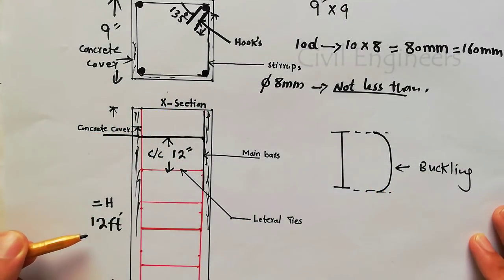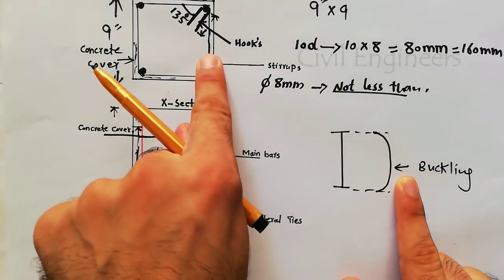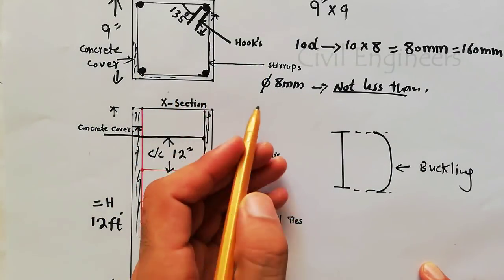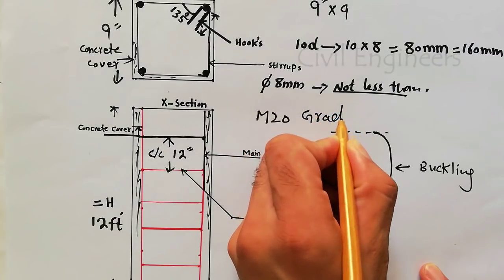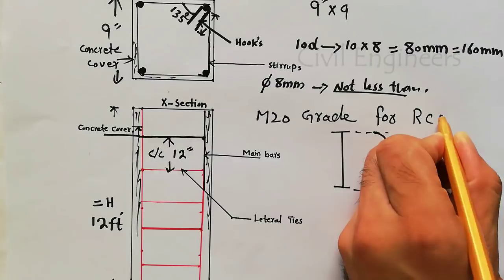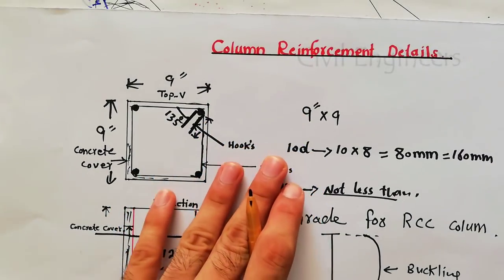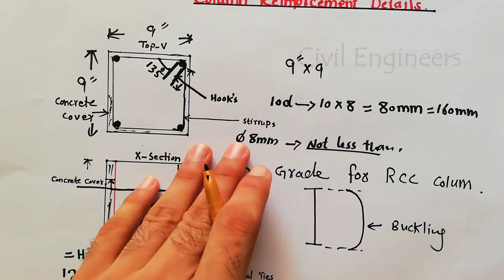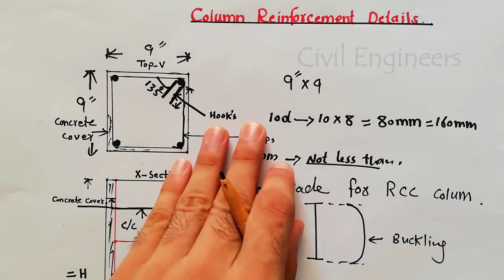If the load is high, do not increase the column height without also increasing the column size and the amount of steel reinforcement. Also, do not use less than M20 grade concrete — use M20 grade concrete for RCC columns. These are the important details about column reinforcement. If you have any questions, comment below. Don't forget to like and subscribe. Thanks for watching — see you in the next video.